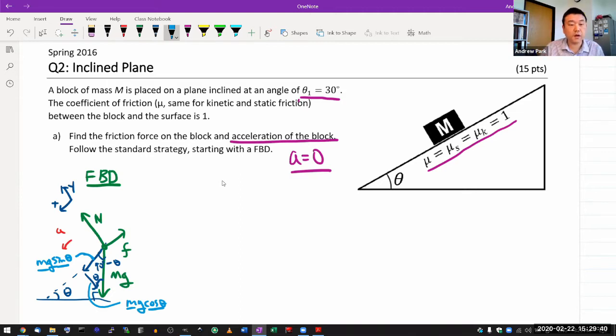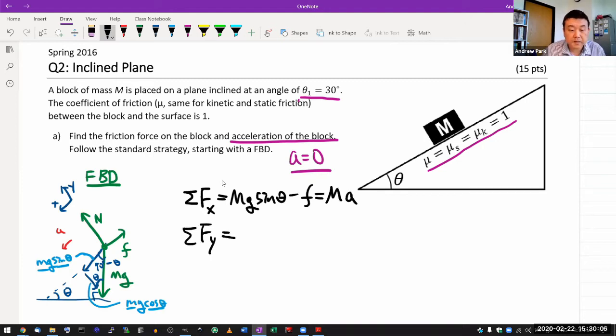That's step number three. Step number four, write down Newton's second law equations. I need two of them, one for each direction. Net force along the x direction is going to be the x component of gravity, mg sine theta minus the friction force, equal to mass times acceleration. And net force along the y direction is n minus mg cosine theta, and this one from the start I know will be zero. Before you call it done, you count your unknowns and equations. I have two equations, and I have friction that's unknown, acceleration that's unknown, and normal force that's unknown.